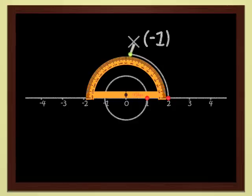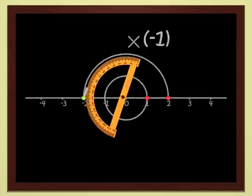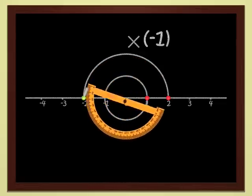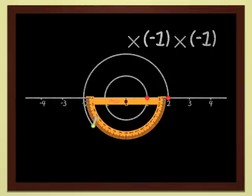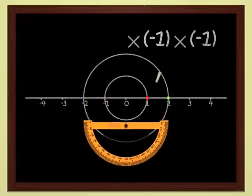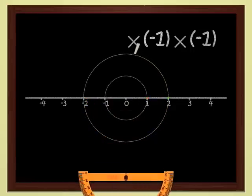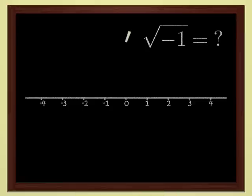You see, for instance, that multiplication by minus one sends two to minus two. And that if you multiply one more time by minus one, you come back to two. Obvious, isn't it? Therefore, there is no number which, multiplied by itself, yields minus one. Another way of saying this is that minus one has no square root.